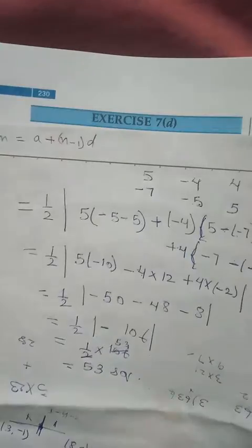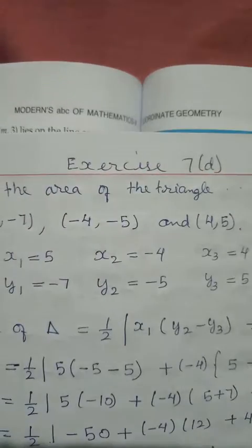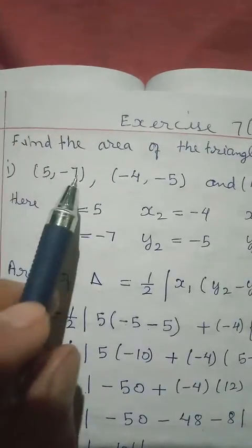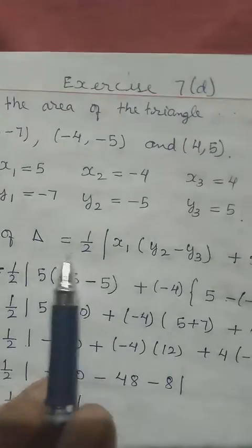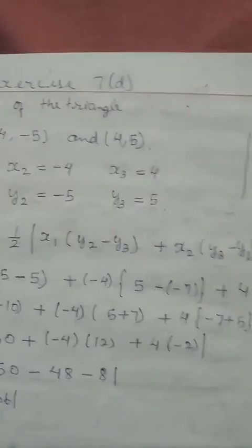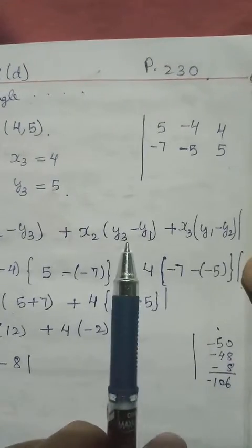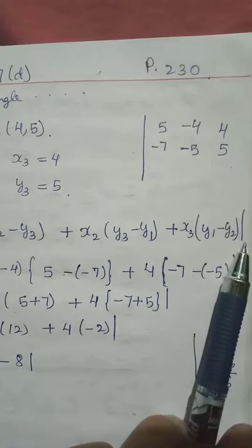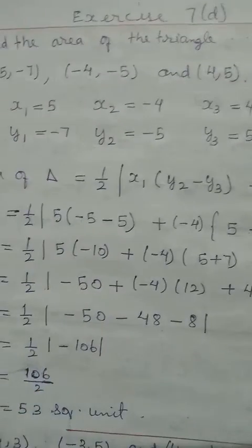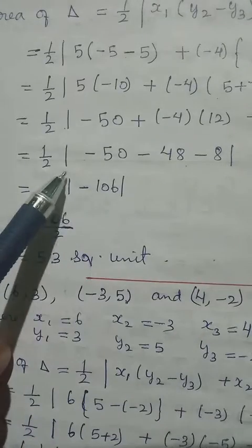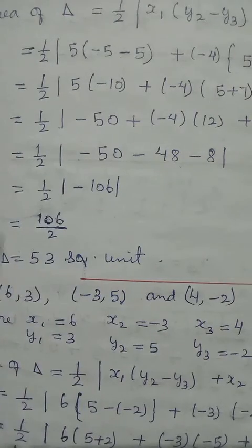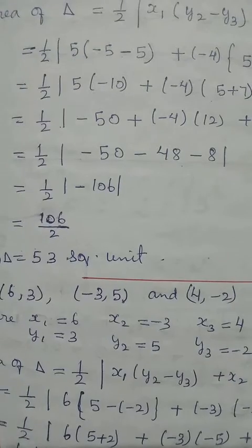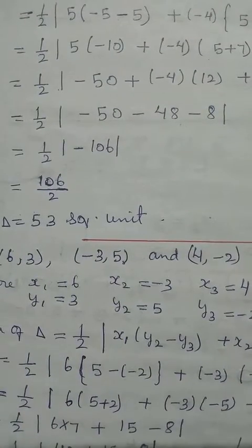You can do the others the same way. But please write properly — write first the formula. Here x1 y1, x2 y2, x3 y3, then write the formula properly. This is the symbol for triangle. Remember: half, we have x1(y2 minus y3) plus x2(y3 minus y1) plus x3(y1 minus y2). Replace the values, check the signs properly — where you have plus and where you have minus. Don't forget to put the modulus. If we have minus and we remove the modulus, it becomes plus.